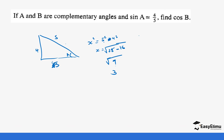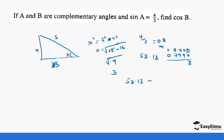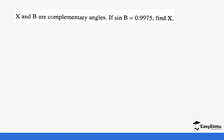An alternative method: 4 divided by 5 gives 0.8. Looking up 0.8 in the mathematical tables, we get 53.13 degrees. Since a plus b equals 90, b equals 90 minus 53.13, which gives us 36.87 degrees.